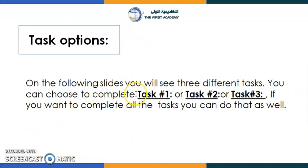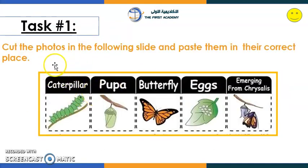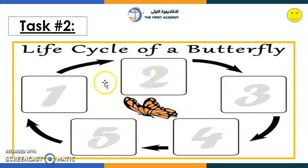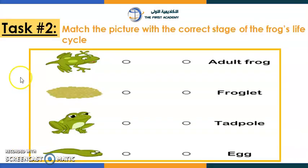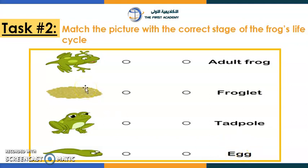Here you have task number one, two, and three — you can choose one or do all of them. For task one, cut the photos in the following slide and paste them in the correct place. You can ask your mom for help — paste them here or write the stages. For task two, look at the pictures and read carefully what's written, then match the picture with the correct stage of the frog's life cycle.